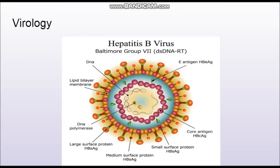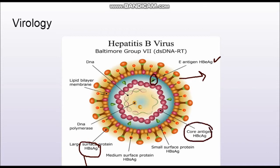Looking at the structure: the surface part is known as the Hepatitis B surface antigen (HBsAg). The core part comprises the HBeAg antigen and the HBcAg antigen — this is the core area. Then there is double-stranded DNA and DNA polymerase. So the core region comprises HBeAg, HBcAg, double-stranded DNA, and DNA polymerase, and the envelope is known as HBsAg.